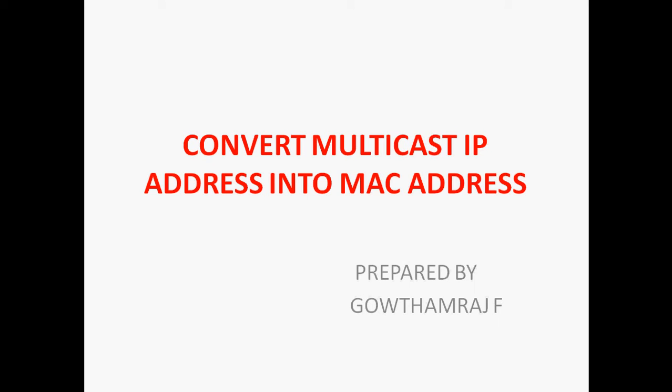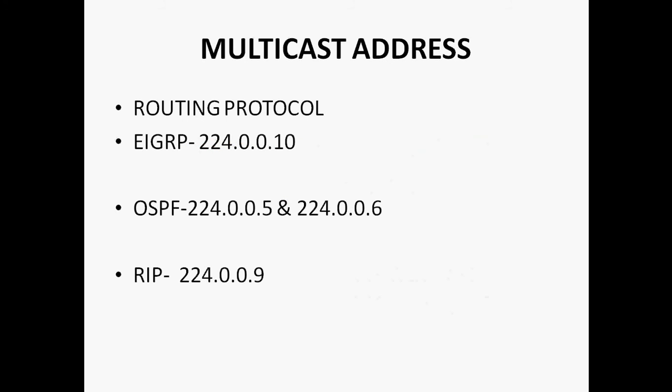So what purpose can we use multicast addresses for? A group of devices can communicate through a multicast address. For example, you can take routing protocols such as EIGRP, OSPF, and RIP. EIGRP routing protocol uses the multicast address 224.0.0.10, and using this address it will be communicating.